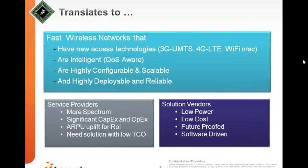This translates to the need for fast wireless networks leveraging new access technologies that give very high-speed data. 3G UMTS offers HSPA Plus, there's 4G LTE, and not to forget Wi-Fi — 802.11n and AC. 802.11AC is touted as 5G Wi-Fi, giving about a gigabit per second throughput.